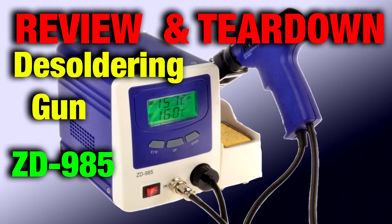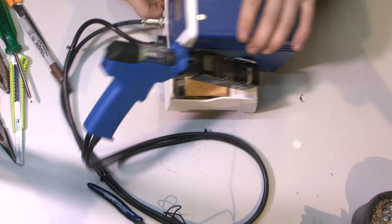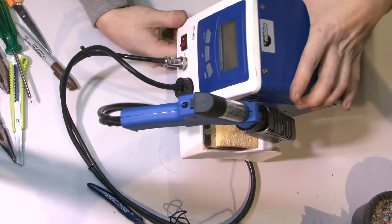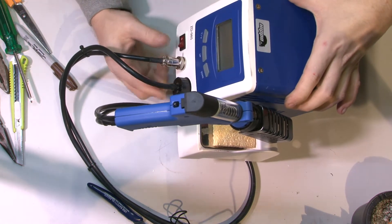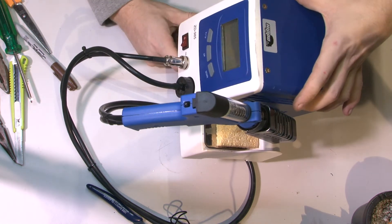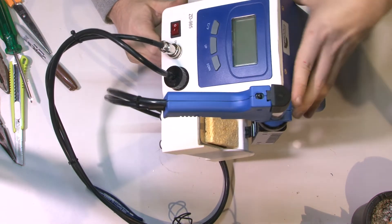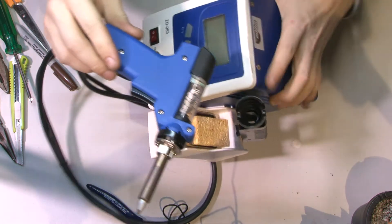Alright guys, so I've got this desoldering station that's gotten a bit dirty and I'm gonna be cleaning the pipes inside and refurbing it a little bit. We'll also get a chance to see what's inside of it. I'm gonna start with the soldering gun disconnected from the platform.